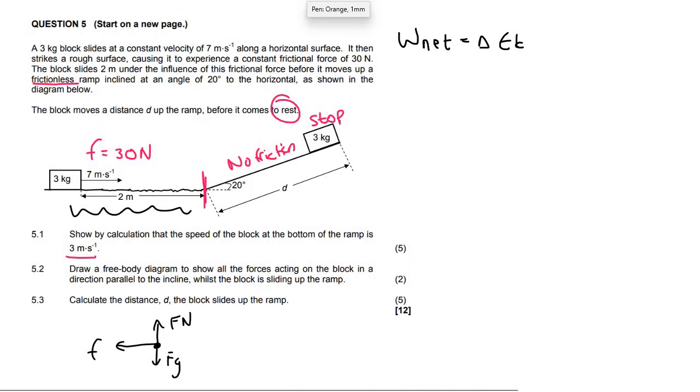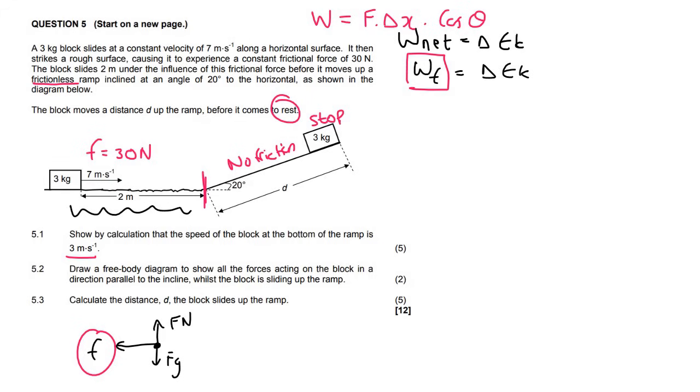The only forces that we really need to consider in W_NET would be the friction. So we can say that W of the friction is equal to delta EK. Remember that the formula for work is F delta X cos theta. So we are going to use that formula now.